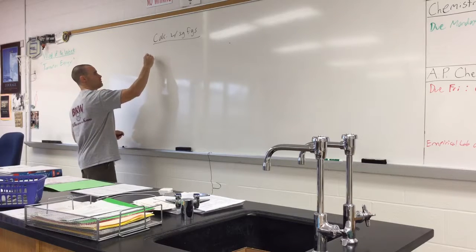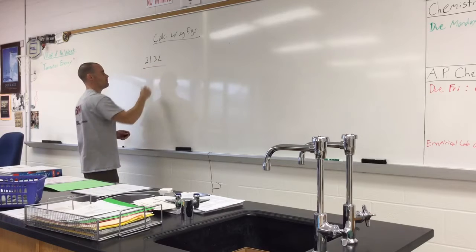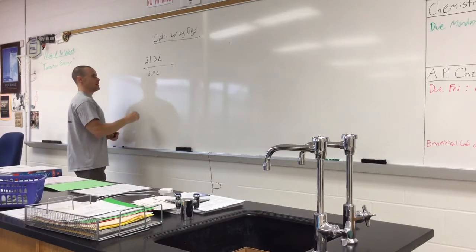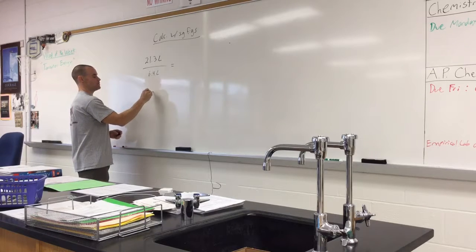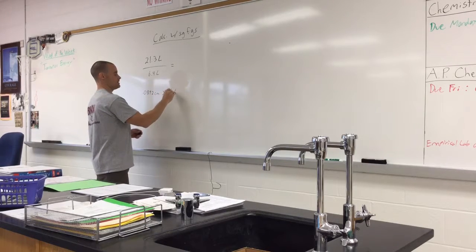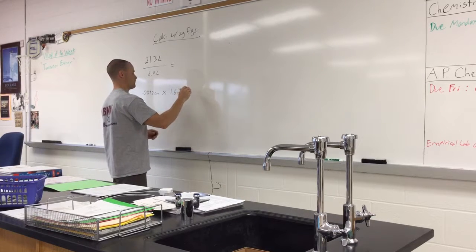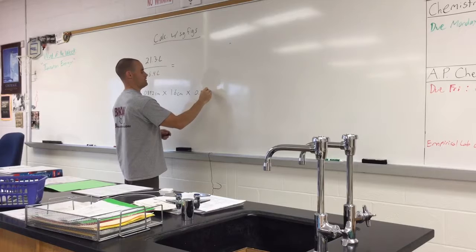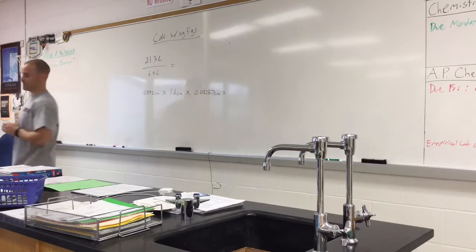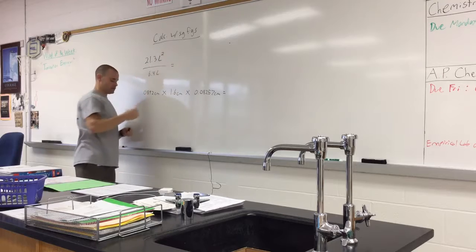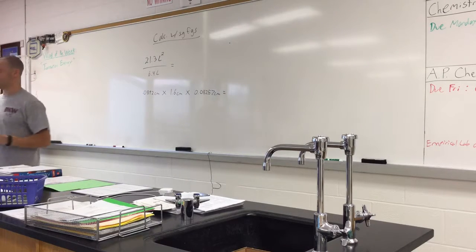So let's take 21.3 liters divided by 6.4 liters. Then we're going to take 0.0892 centimeters, multiply it by 1.6 centimeters, multiply it by 0.08257 centimeters. Just making these numbers up. This is liters squared up here, which is a really weird measurement, but that's okay. I'll have a little practice with units as well.